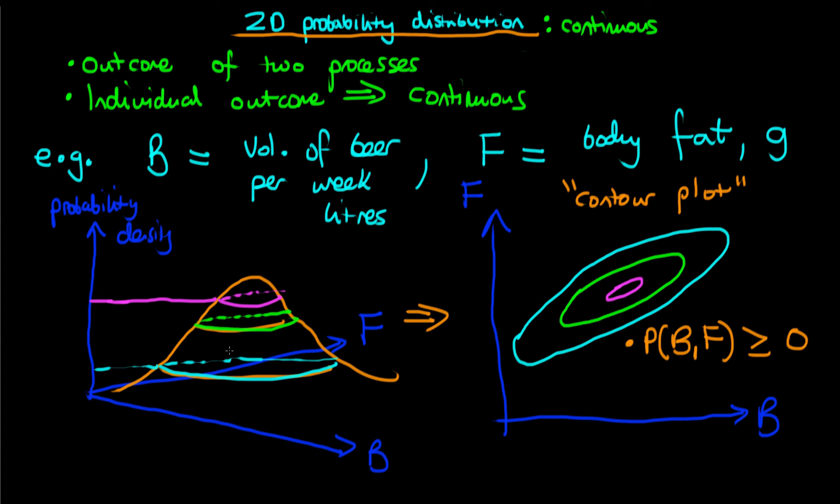And we see that that's satisfied here because of the fact that our probability density is always greater than zero. The second condition is essentially the analog of the two-dimensional discrete case, where we had to do two summations.